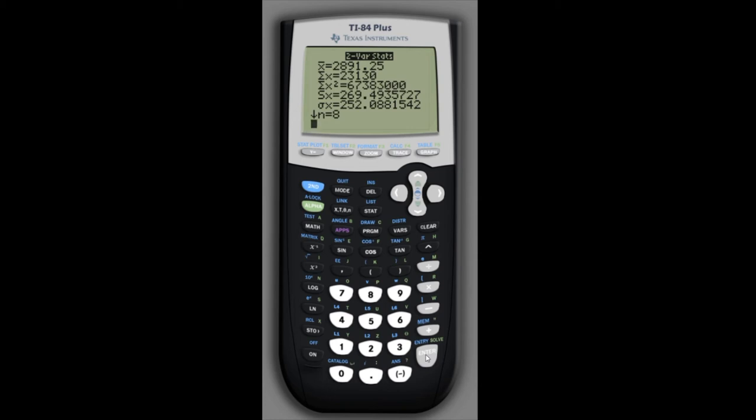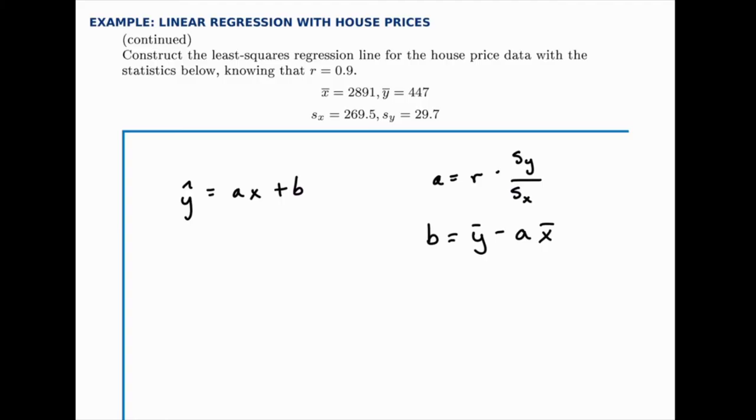The average for the sizes is 2891.25, the standard deviation is 269.49. If we scroll down we can find the average for y and the standard deviation for y as well. Now that we have those values, we can plug them into the formulas. Here they're listed as x̄, ȳ, sx, and sy.